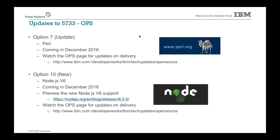Also in December, Node.js version 6 will be available. Option 1, the first version of Node.js, will be moving out of maintenance in December. We already have version 4 out there, and version 6 is coming in December. If you're using the first version of Node.js, it's probably time to think about moving up to one of these newer releases. Our OPS page on developerWorks will be updated with the latest information.